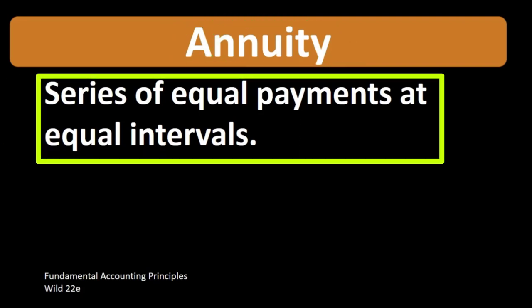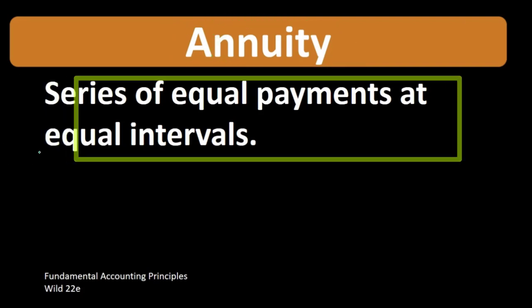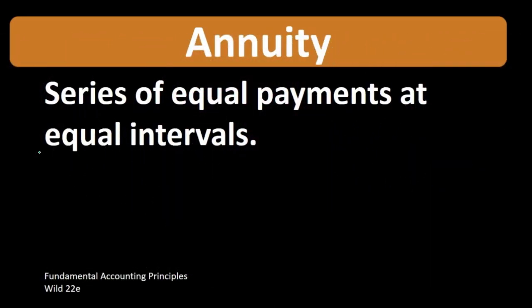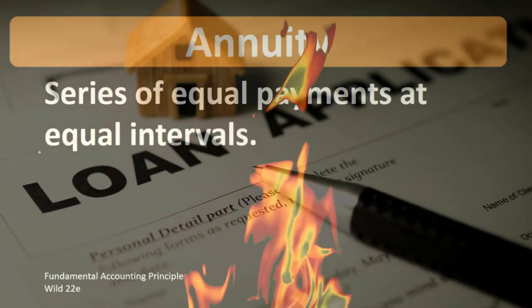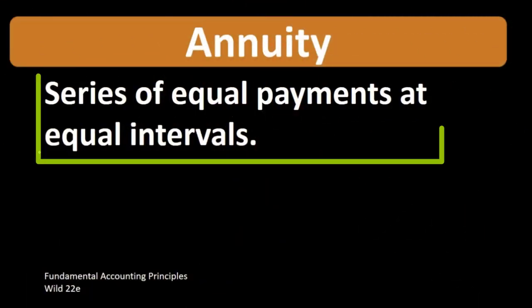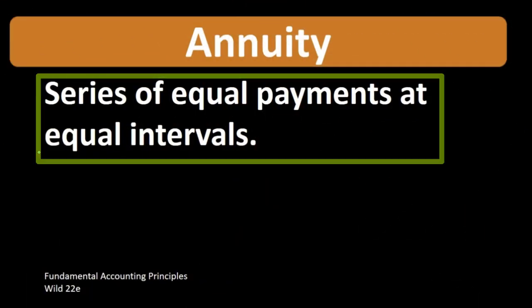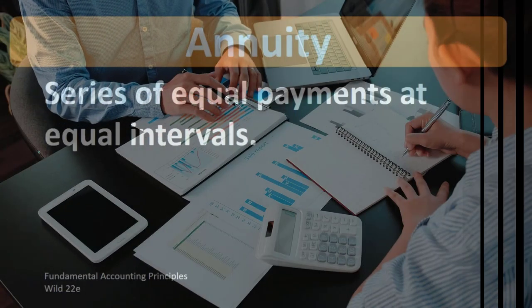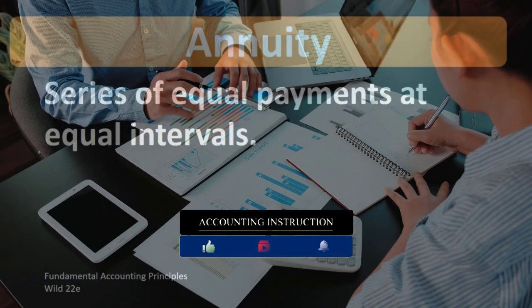We could have something like an insurance policy where they're trying to figure out how many equal payments would be there for something like life insurance. We often run into annuity payments when thinking about loans — we could set up a loan with equal payments, a similar structure to a mortgage loan. The annuity table helps give us the time value of money and helps us break out principal payments and interest payments.